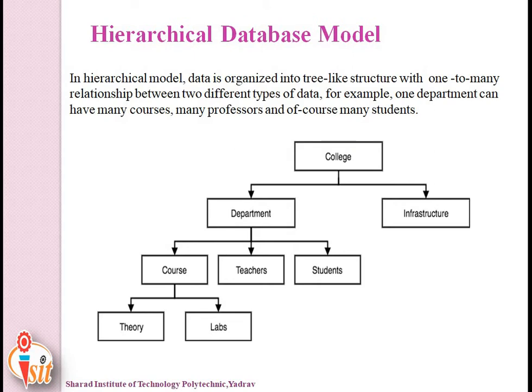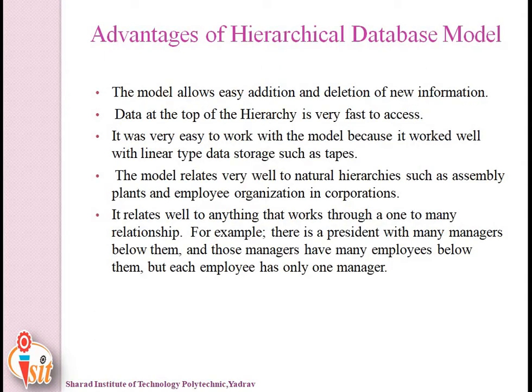In the hierarchical model, a child node will only have a single parent node and it includes one-to-many relationships. An example is: college is the root, then department and infrastructure are parents. Under department there are three child nodes: courses, teachers, and students. Advantages include easy addition and deletion of information, very fast access to data at the top of the hierarchy, and it relates well to one-to-many relationships.